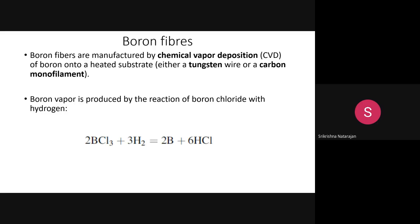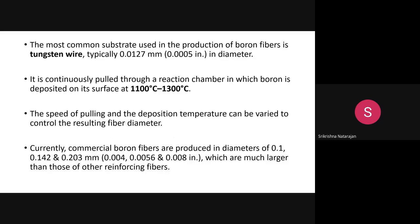For boron fiber manufacture, you require a tungsten wire or a carbon monofilament, because over this substrate the boron will get formed. Boron forms through a chemical reaction between boron trichloride and hydrogen gas, producing boron with the liberation of hydrochloric acid. A tungsten wire of around 0.0127 mm diameter is used as the substrate.